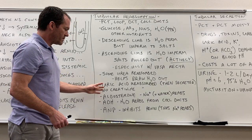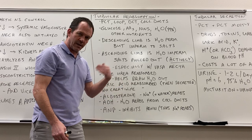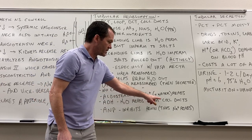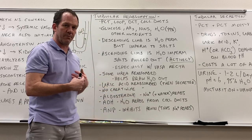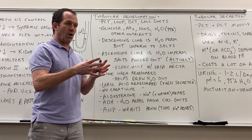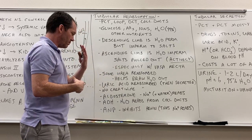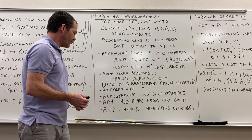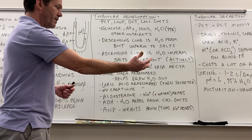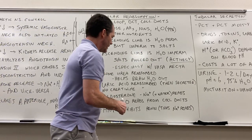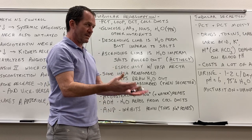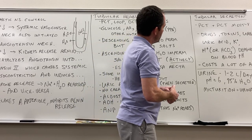Hormones affecting reabsorption: aldosterone promotes sodium and water reabsorption; anti-diuretic hormone (ADH) allows water reabsorption from the collecting ducts by opening them up to greater water flux; and atrial natriuretic peptide inhibits renin release and inhibits sodium reabsorption — the hormone released when you want to urinate more.